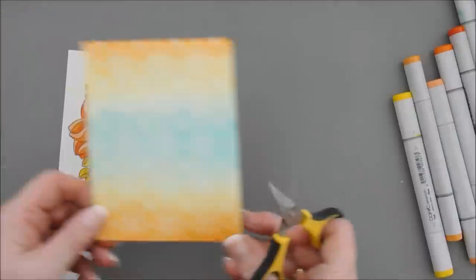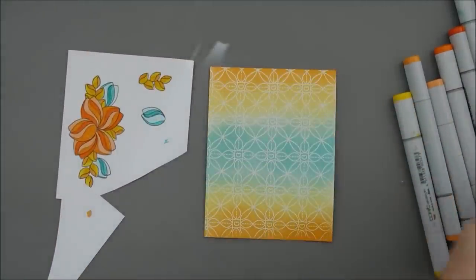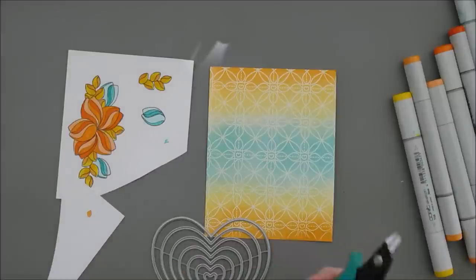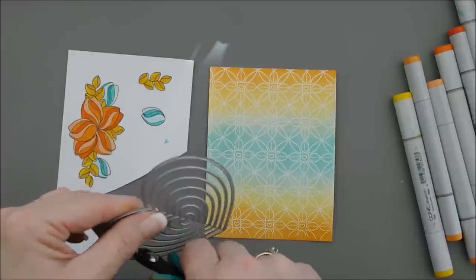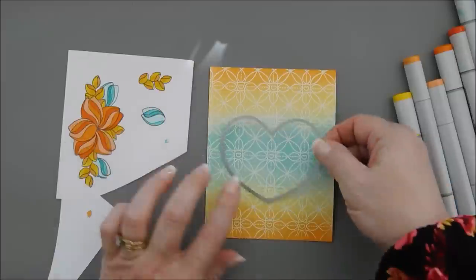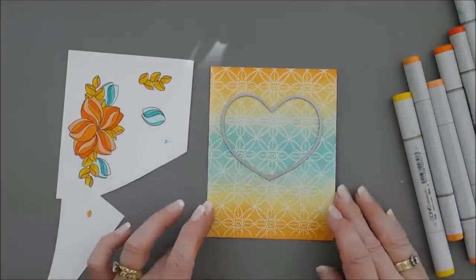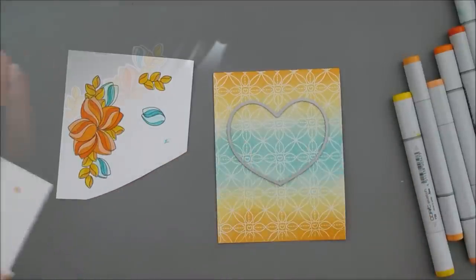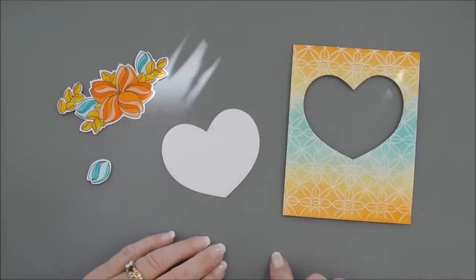And while I'm fussy cutting too, I'm going to go ahead and take one of my hearts. I'm going to take the second from the largest, and I'm going to cut out a window on my panel here. So my images are fussy cut out, and then I did cut out a window in my panel.